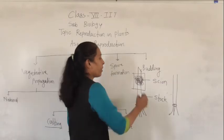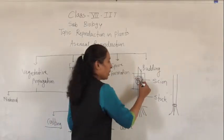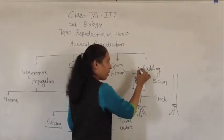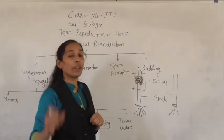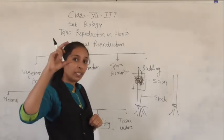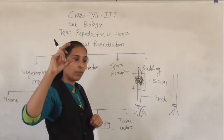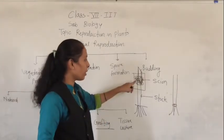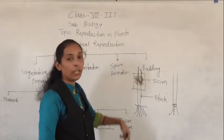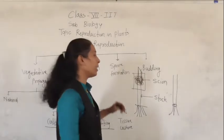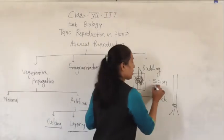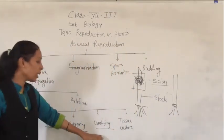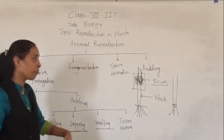In grafting, we keep one another plant or we take a cutting and put it on the rooted plant. The cutting inserted is called the scion. So this method is called grafting.